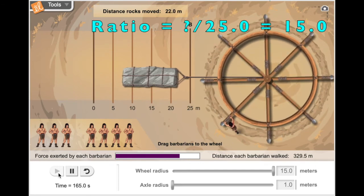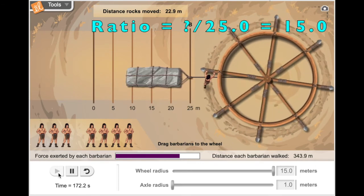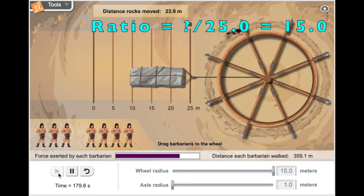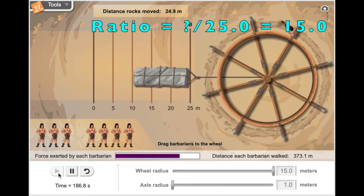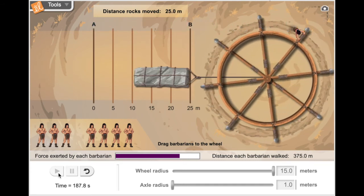This means we can predict how far the barbarian has to walk. What number divided by 25 is 15? And that's 375. So the barbarian had to walk 15 times the distance, but it would use 1 15th of the force to do that.